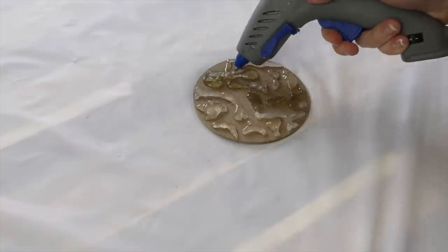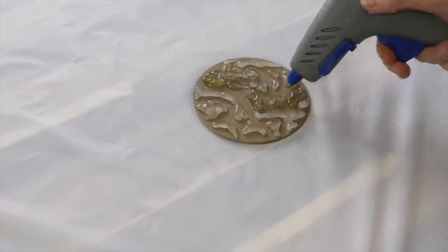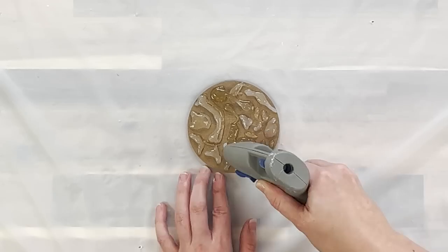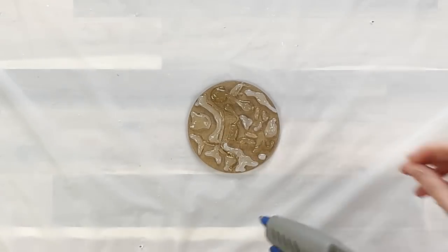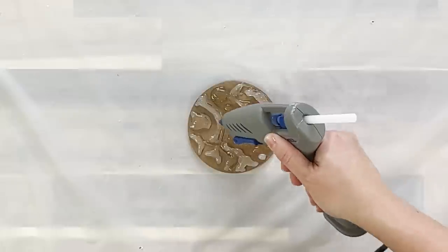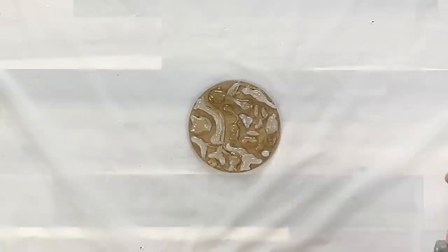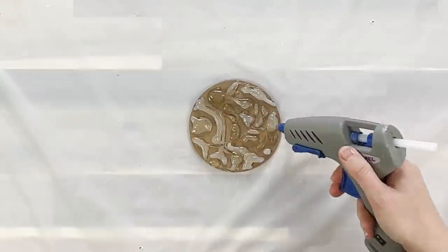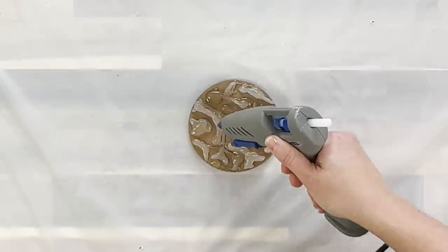Once it had dried you could just go back in with some more hot glue and layer it up so you could get some really high peaks, some really low peaks, and you could either do swirls, dots, blobs like I'm doing, make it really abstract and random. It's completely up to you when you're doing it with the hot glue.